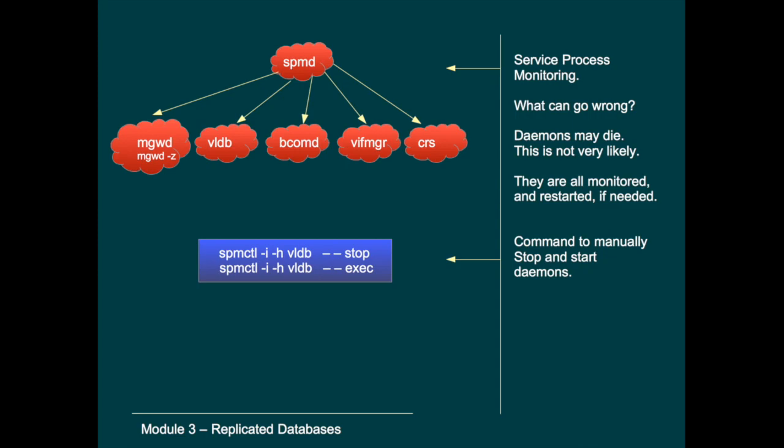What can go wrong? A daemon can stop running by itself. That is not necessarily problematic — if you want to create a volume on a node of which the VLDB daemon is not running, then that volume cannot be created and you'll get an error message. The RDB ring will not be offline though; you could create the volume on another node. But you do want the daemon up and running again.